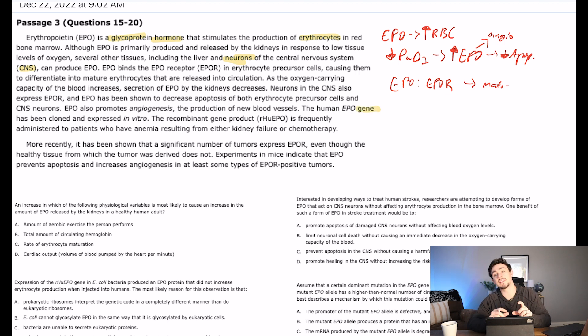has been cloned and expressed in vitro. The recombinant gene product—recombinant just means like synthesized—is frequently administered to patients who have anemia, anemia is low red blood cells, resulting from either kidney failure or chemotherapy. So kidney failure or chemotherapy can be treated with this recombinant erythropoietin.